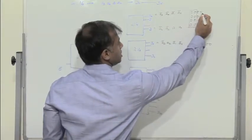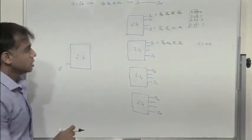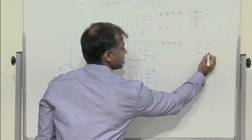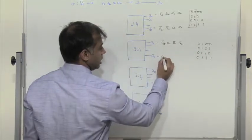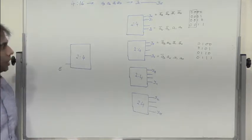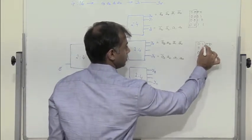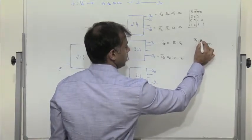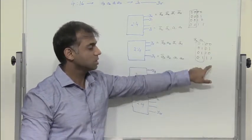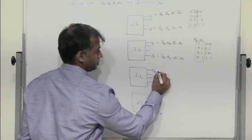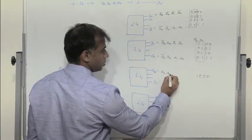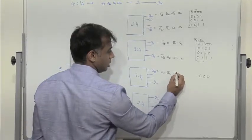For outputs Y4 through Y7, we observe A3 bar into A2, with A1 and A0 varying 0,0 through 1,1. For Y8 through Y11, the input starts at 1,0,0,0, giving A3 into A2 bar into A1 bar into A0 bar. So for that group, we have A3 into A2 bar with A1 and A0 varying.